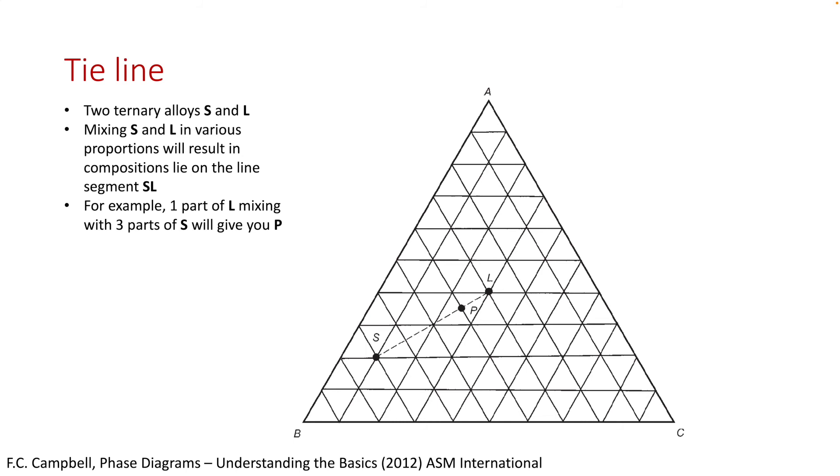Next, we'll introduce you a very important concept in the ternary phase diagrams called the tie line. In this example, assume we have two ternary alloys with compositions at S and L. If you mix S and L at any arbitrary compositions, the mixture composition will lie on the line defined by L and S. For example, for the composition at the point marked by P, this is achieved by mixing one part of L with three parts of S.